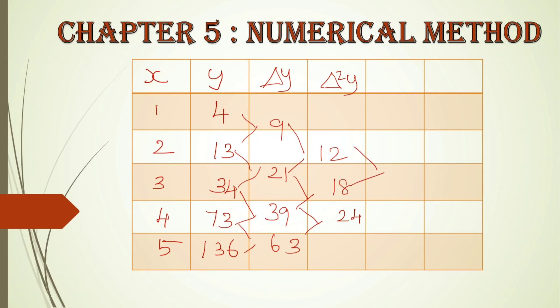Now delta cubed y — the third differences. The difference between 18 and 12 is 6. The difference between 24 and 18 is 6. So the delta cubed y values are: 6, 6. The table has formed correctly.